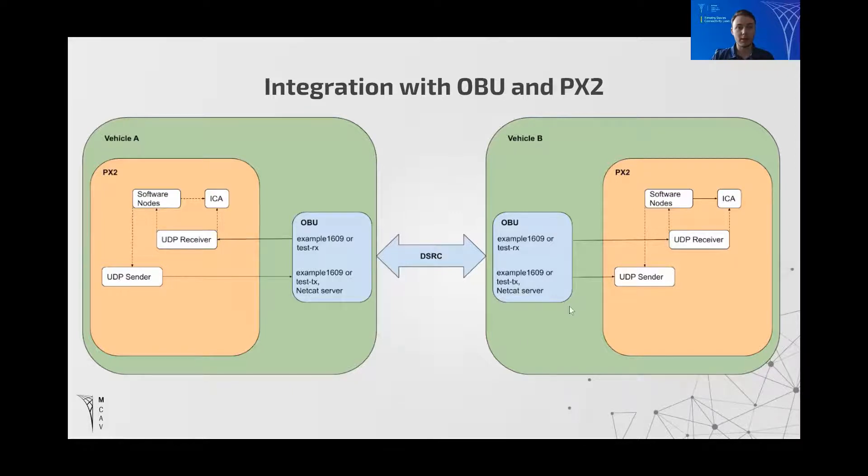This diagram shows how the flow of data works with the different parts of the CARS system, including another project of ours, ICA which stands for Intersection Control Algorithm.